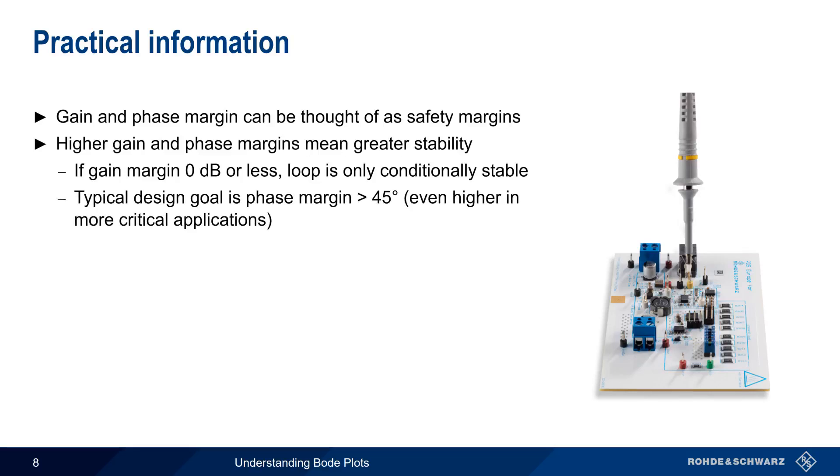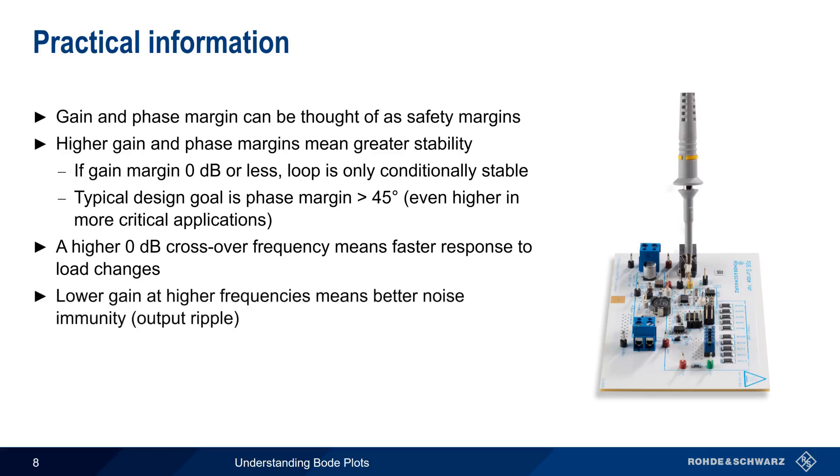In addition to safety considerations, performance is also affected by values that we can determine from our Bode plots. For example, a higher 0 dB crossover frequency usually means a faster response to load changes. And lower gain at higher frequencies means better noise immunity, or lower output ripple.